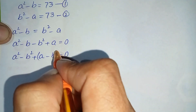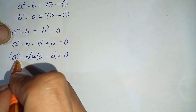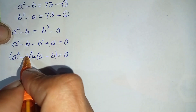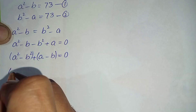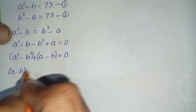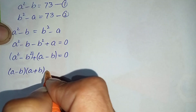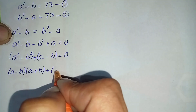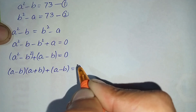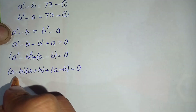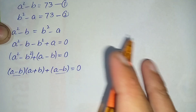We group these terms in brackets. We have the algebraic identity a squared minus b squared, so we expand it. It becomes (a minus b)(a plus b) plus (a minus b) equals zero. Now notice that (a minus b) is common in both terms.